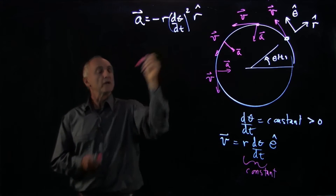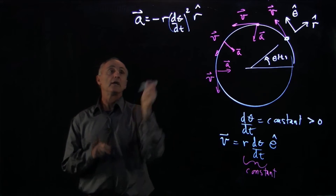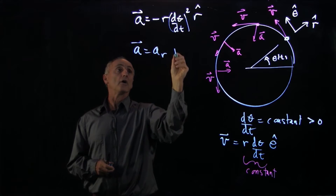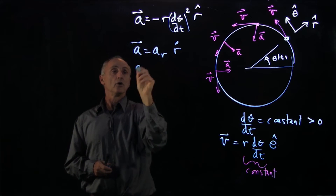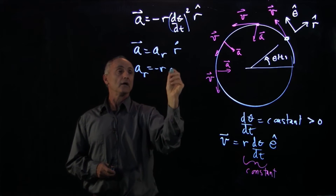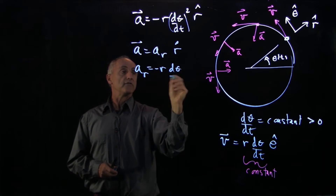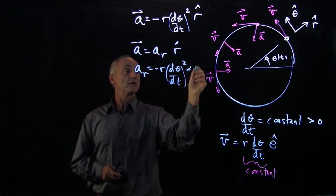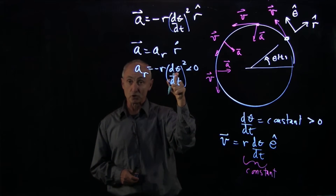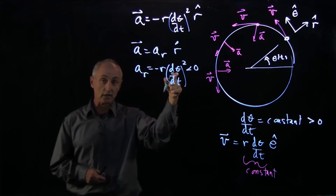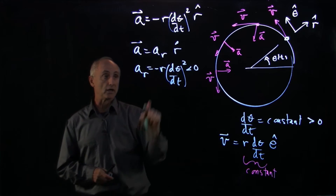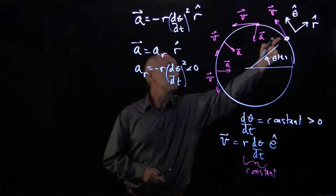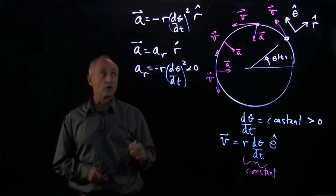We can write that acceleration vector as a component a_r times r̂, where this component is given by minus r times (dθ/dt)². It's always negative, because when you square this quantity, that's always positive — the minus sign means that the acceleration is pointing inward.